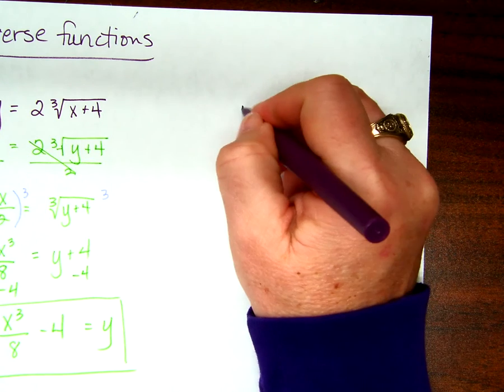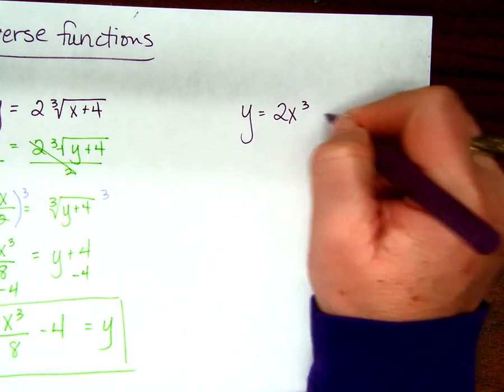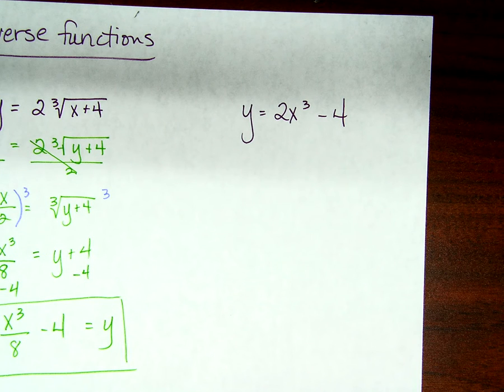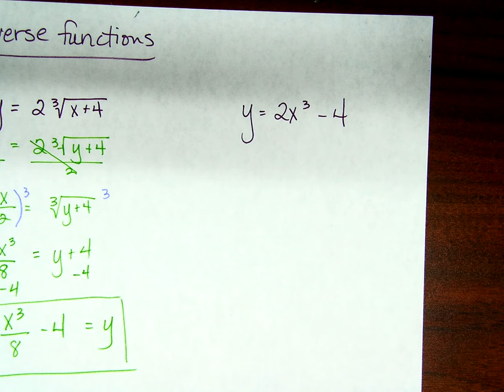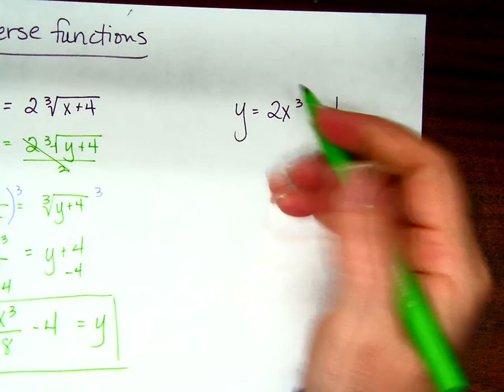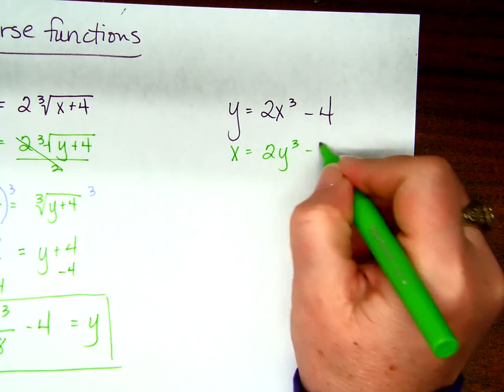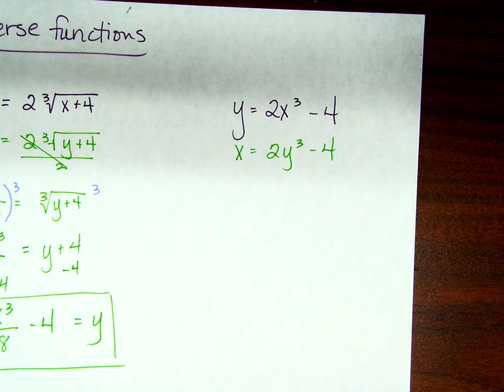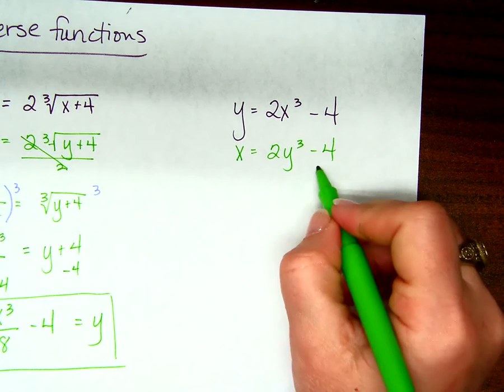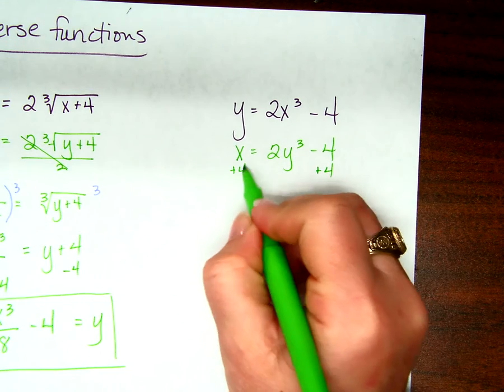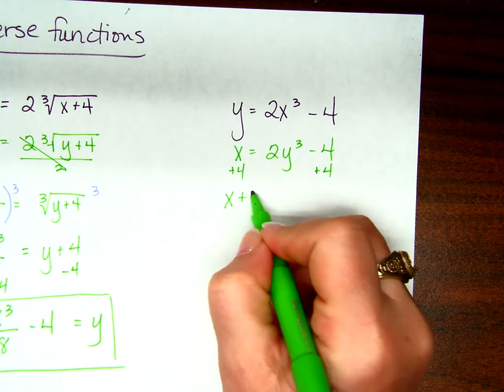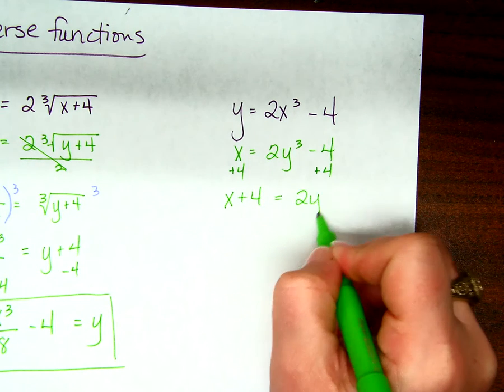What about this problem? y equals 2x to the 3rd minus 4. What do we do first to find the inverse? Switch x and y. So we have x equals 2y to the 3rd minus 4. So what's first? Add 4. Is that the only thing we can do first? No, it's just the easiest, okay? x plus 4 equals 2y to the 3rd.